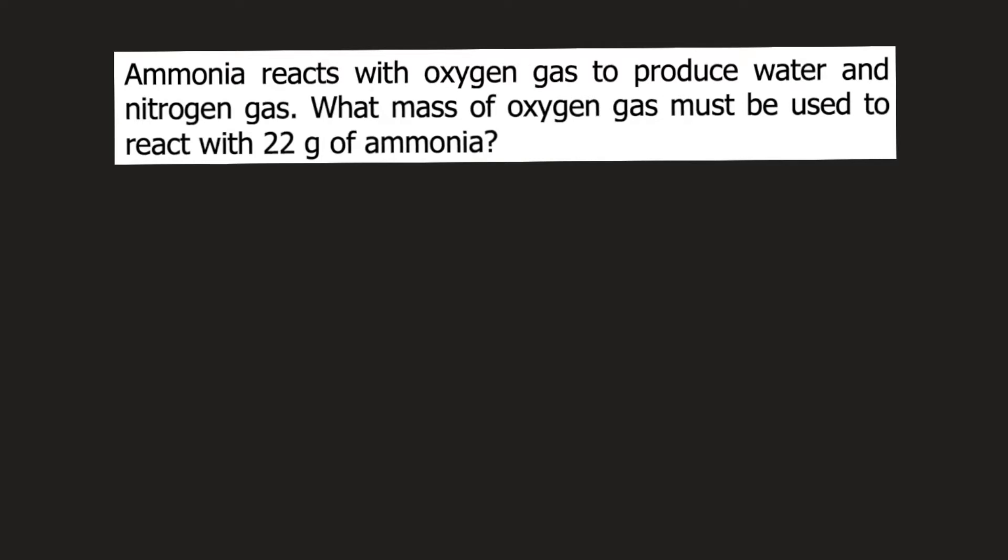The first thing you need to do is to write the balanced chemical reaction. The balanced chemical reaction for this one would be 4 moles of ammonia plus 3 moles of oxygen forms 2 moles of nitrogen gas plus 6 moles of water.